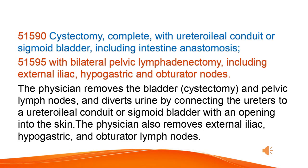Cystectomy, complete, with ureteroileal conduit or sigmoid bladder, including intestine anastomosis, with bilateral pelvic lymphadenectomy, including external iliac, hypogastric, and obturator nodes. The physician removes the bladder and pelvic lymph nodes, and diverts urine by connecting the ureters to a ureteroileal conduit or sigmoid bladder with an opening into the skin. The physician also removes external iliac, hypogastric, and obturator lymph nodes.